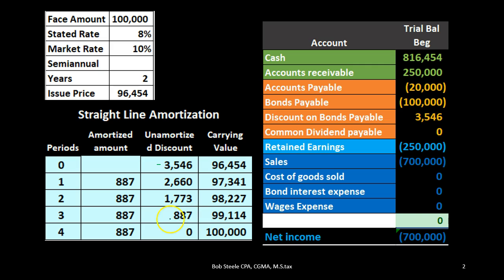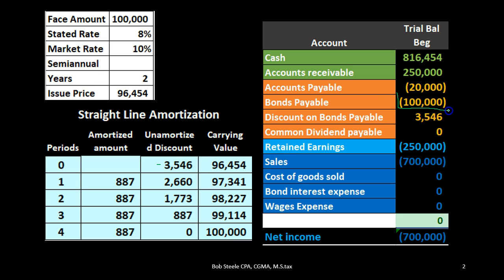Finally, in period four, we bring the $887 down by $887 to $0, and the carrying amount becomes $100,000 minus $0, leaving us with $100,000. The point is that at the end of four periods — in this case two years — we want to be left with just the bond payable, and the discount needs to go away, because at the end we're just going to pay off the bond. This is the fast or easiest way to think through this.